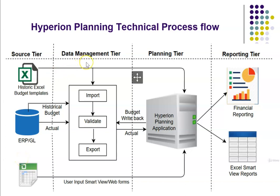The second layer is the data management tier. Why do we need this layer — can we not directly load the source into Hyperion planning applications? There are a couple of reasons. First, historical Excel templates might be in a local chart of accounts, and we can do the mapping to a global chart of accounts in the data management layer. Second, we can automate these processes, particularly writing actual data from ERP to Hyperion planning application, or writing back data from Hyperion planning application to the ERP layer.